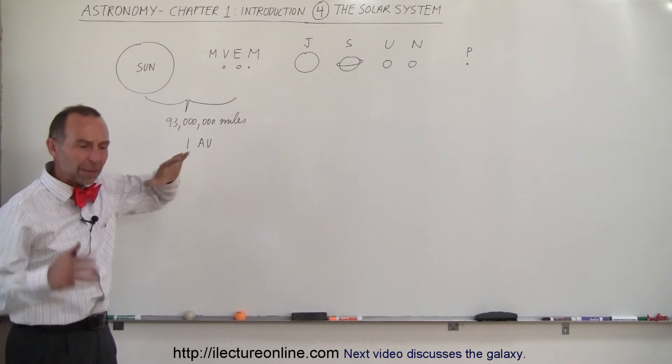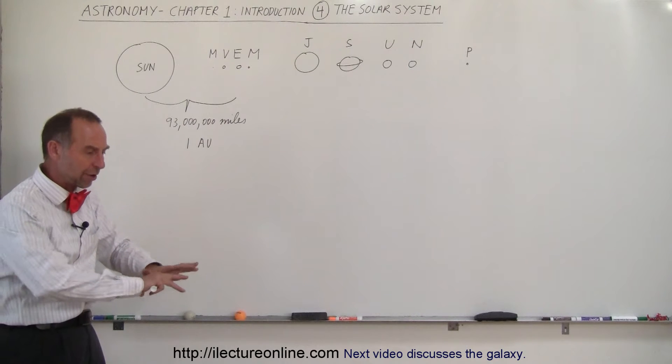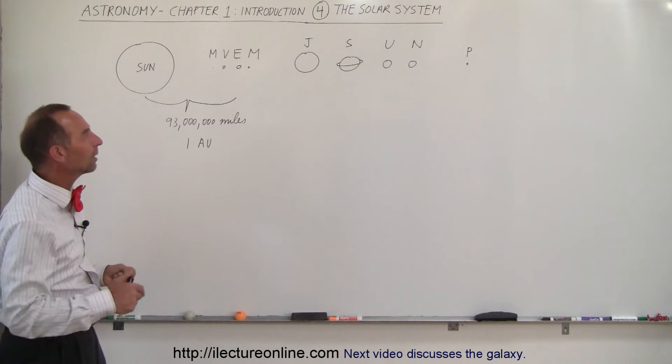The four terrestrial planets, the type of planets where you can actually walk on. They have a hard surface. They have a rocky surface. You can walk on those planets.